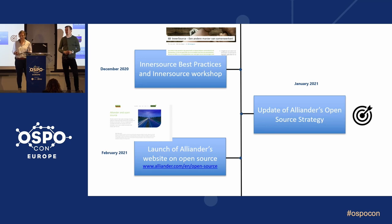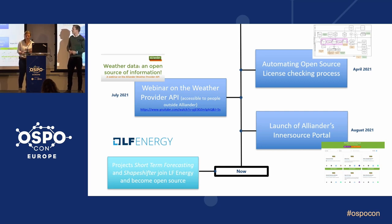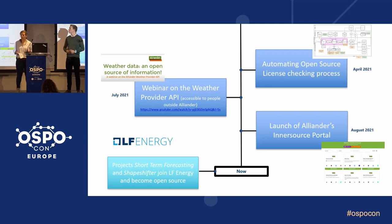Moving on to April of this year — licenses. We feel it's very important that our projects use the right license. We built a way of including the license-checking process into the CI/CD pipeline, which makes it a lot easier for our projects to see if they are compliant. This is a very nice improvement.